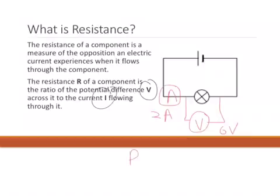then the resistance of the bulb is equal to potential difference V over I, which is equal to 6 volts divided by 2 amperes. That will give us 3 ohms.